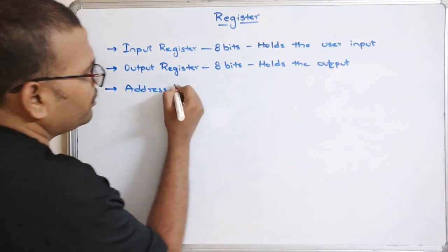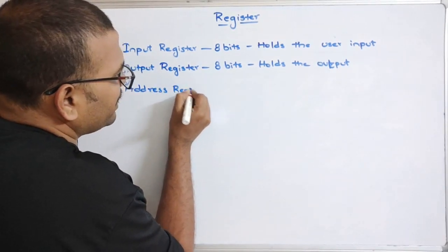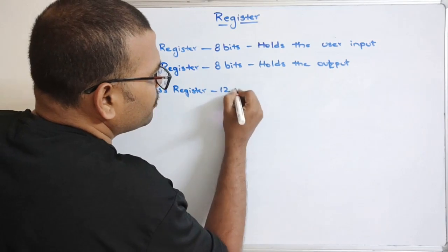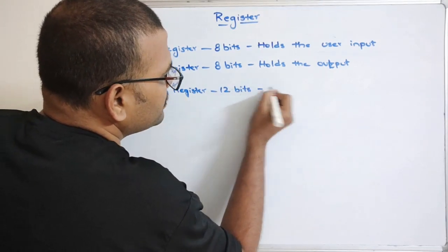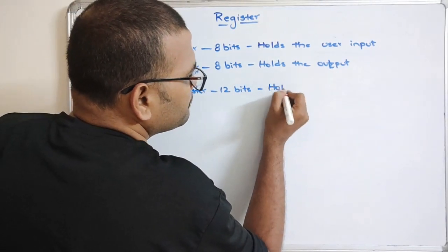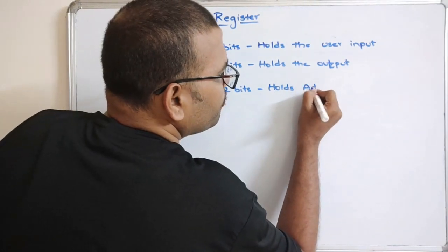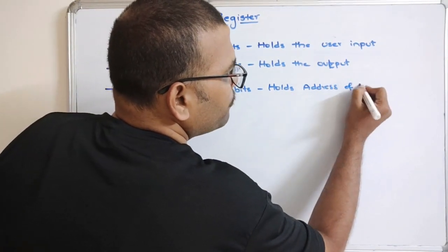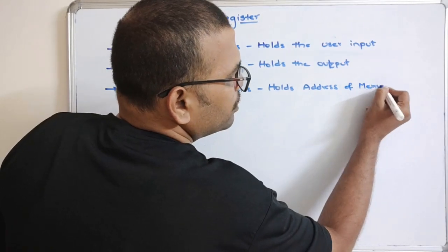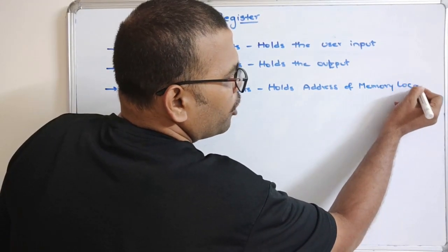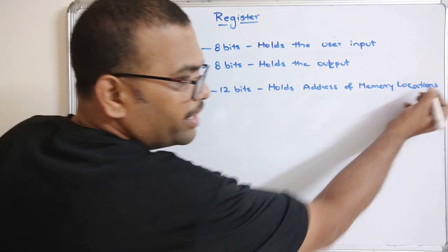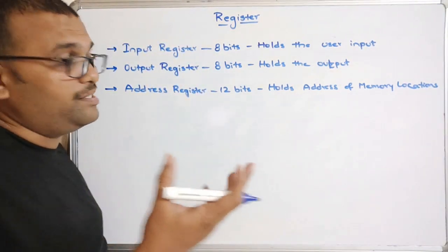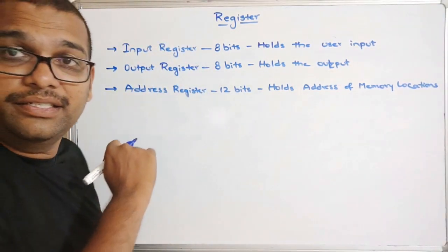The next one is the Address Register. Its size is 12 bits and it holds the address of a memory location. Memory has many locations, each identified by an address, and those addresses can be stored in this address register to retrieve the corresponding data.